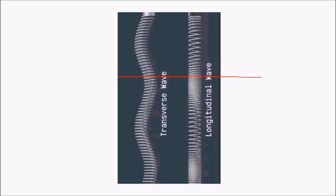When transverse waves enter a liquid medium, the liquid not having enough shear strength means there are no vibrations perpendicular to the wave propagation, and hence secondary waves get lost in liquids. In longitudinal waves, which are compressional, wave motion is not dependent on shear strength. The particles vibrate perpendicular to the horizon, and liquids have the ability to vibrate in that direction, so they don't get lost in liquids — though their intensity decreases with decrease in velocity.